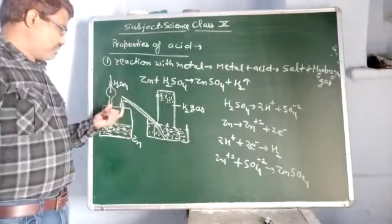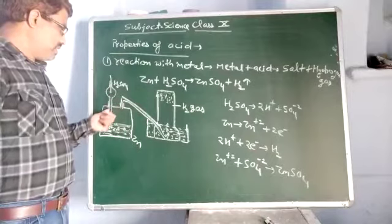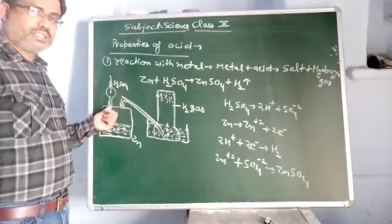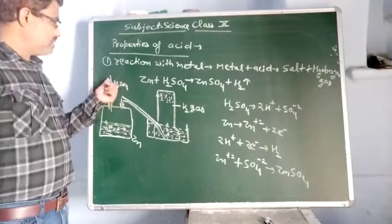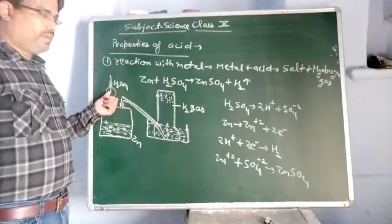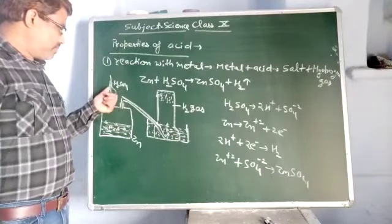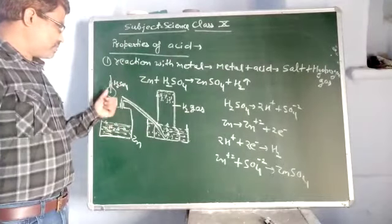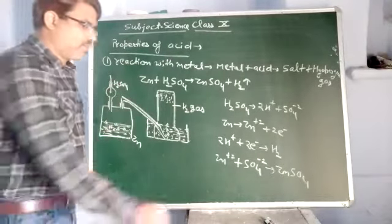And above this bottle, you can see there is a dropper. We add some amount of dilute H2SO4. What will happen when H2SO4 enters inside and reacts with zinc, the H2 gas is formed.